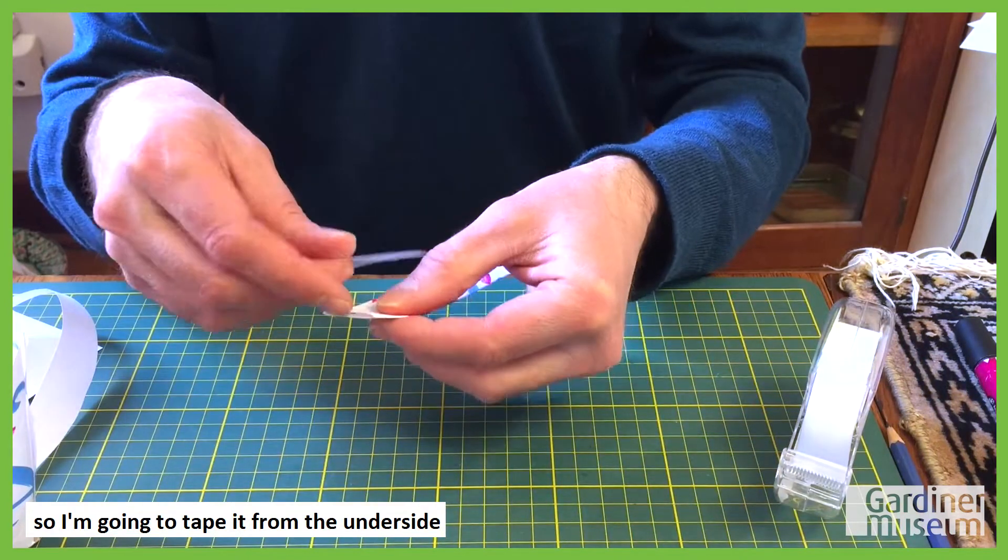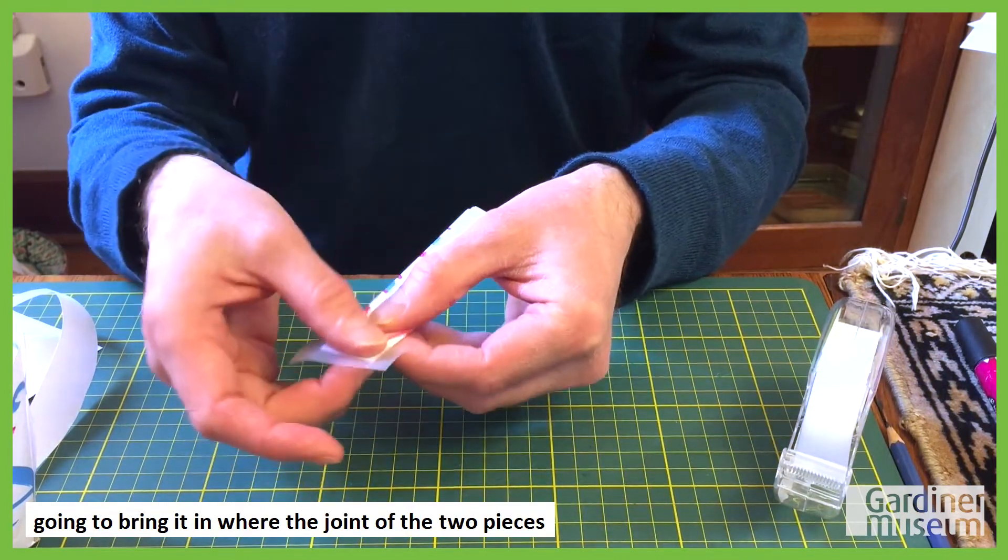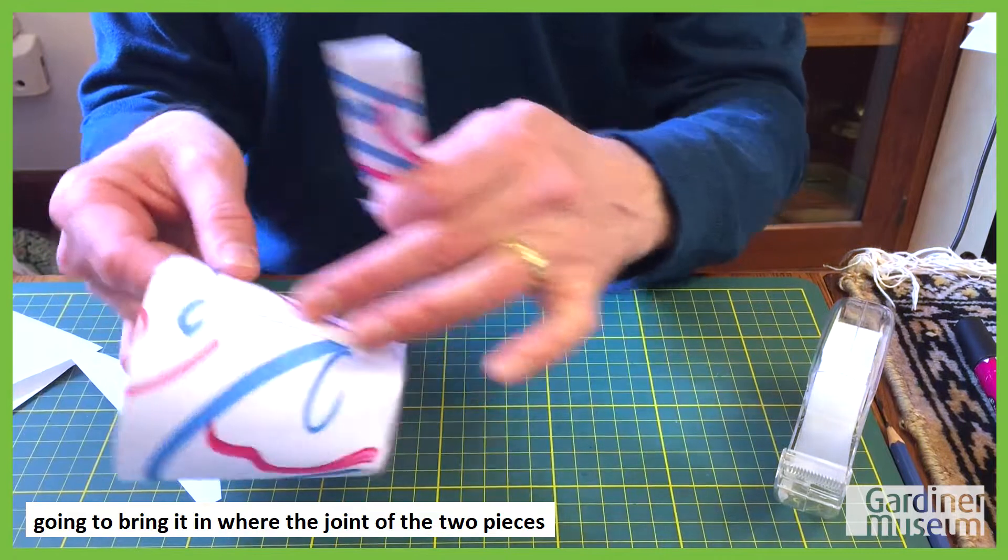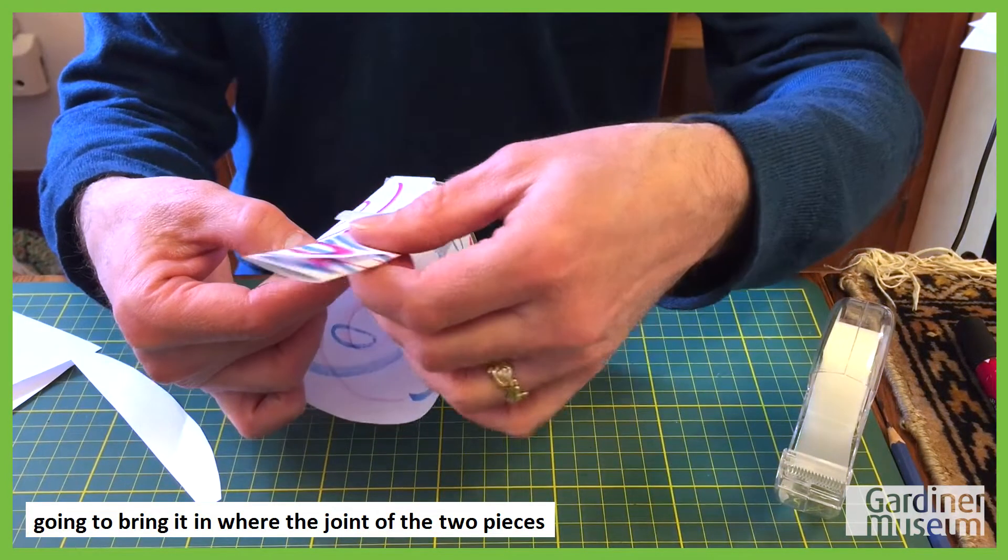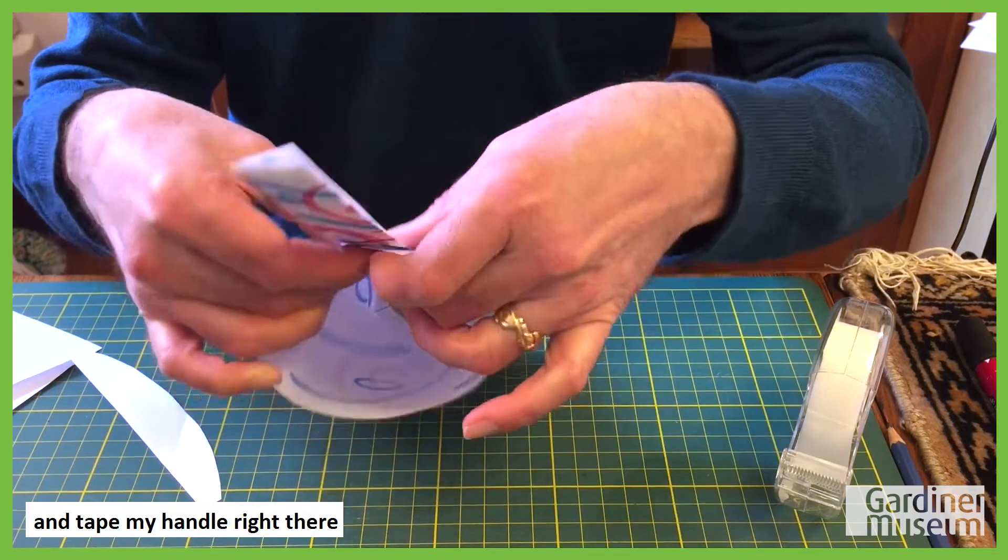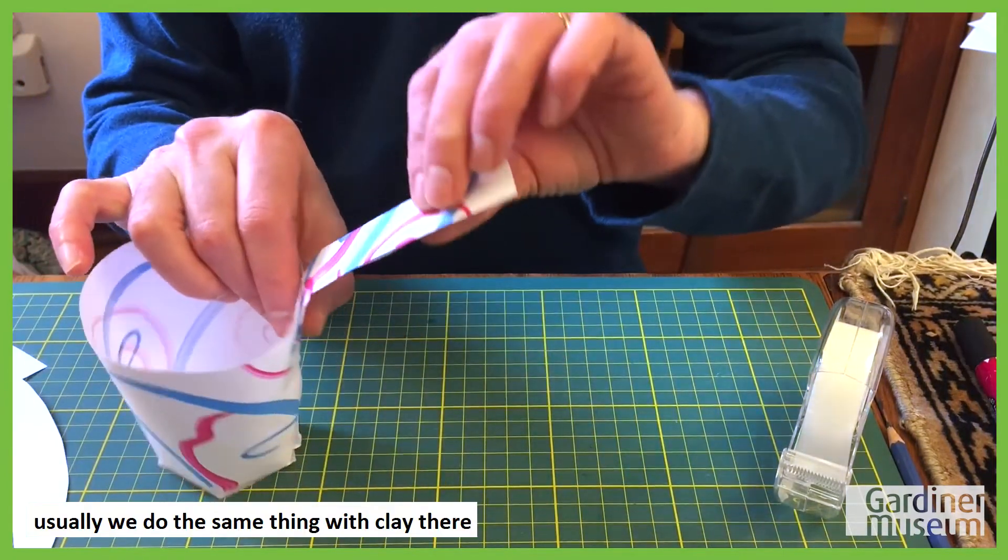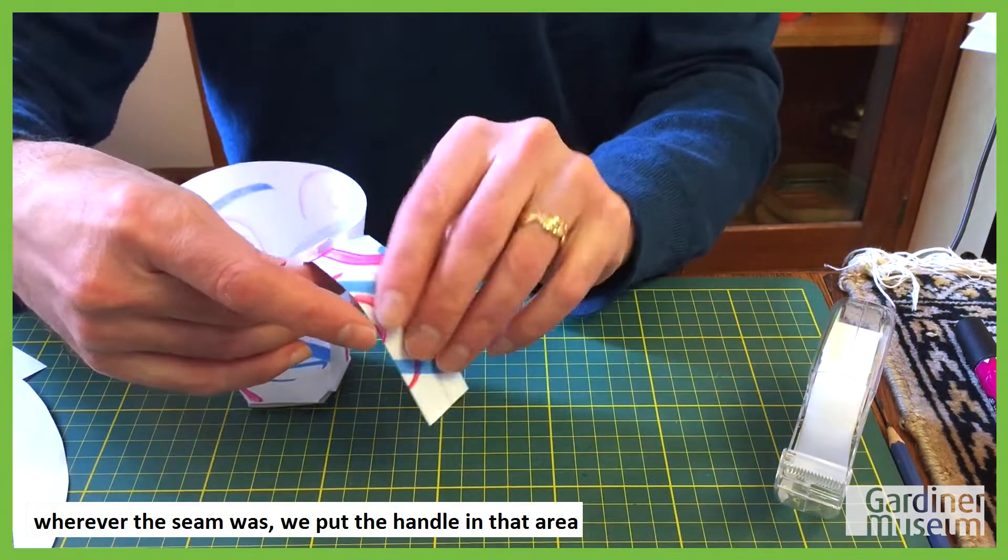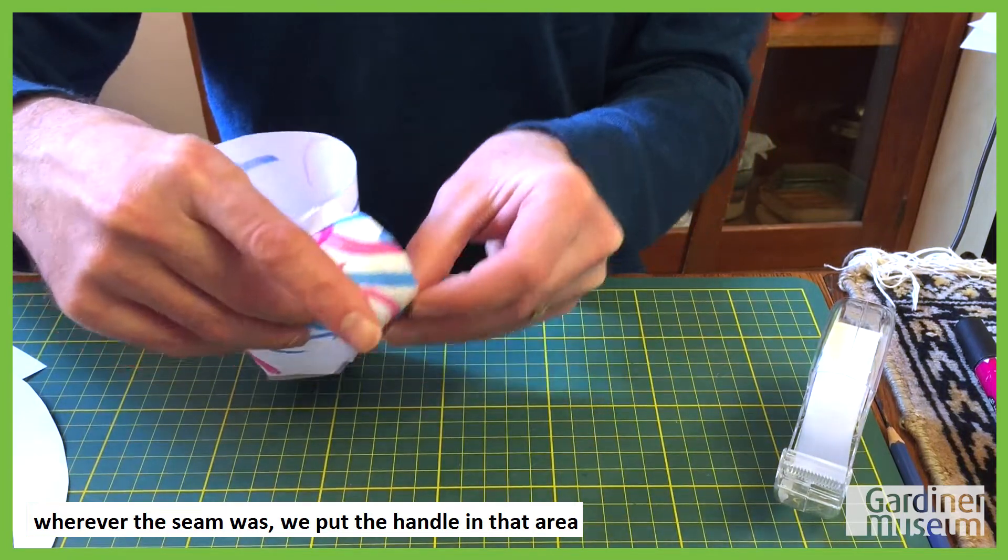Put it there. I'm going to bring it in where that joint of the two pieces of paper is on the cup, and tape my handle right there. Usually we do the same thing with clay there. Wherever the seam was we put the handle in that area.